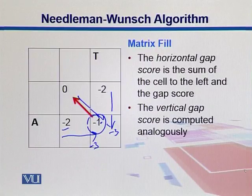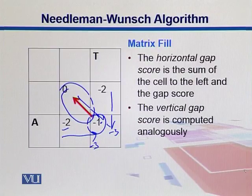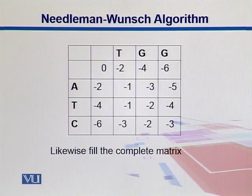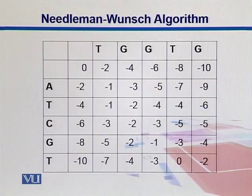Among minus 3, minus 3, and minus 1, the maximum is minus 1, so we take the score coming from the diagonal. The red arrow here is a pointer telling us we derived this score from the diagonal. It will help in the last step — the traceback step. Likewise, we keep moving through all cells, picking up maximum scores, and in the end we fill the complete matrix.